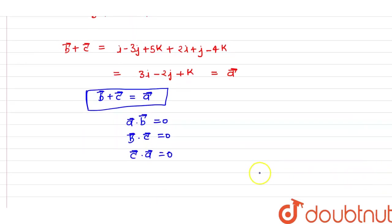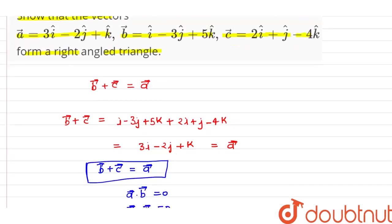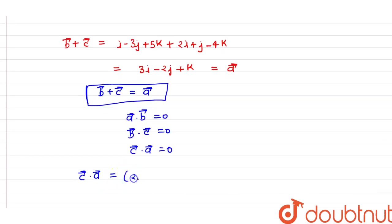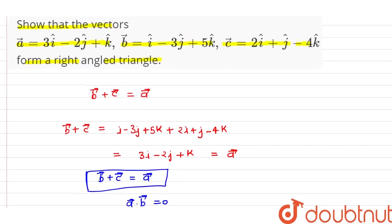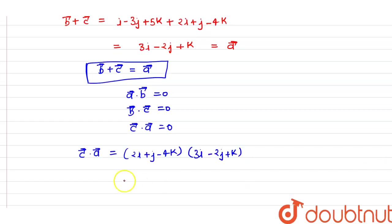We will find vector c · vector a. The value of vector c is 2i plus j minus 4k, and the value of vector a is 3i minus 2j plus k. We will now compute the dot product of these two vectors.